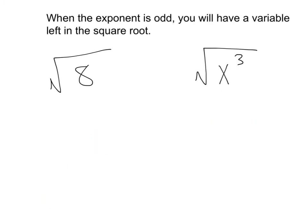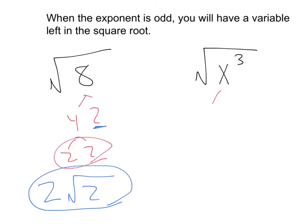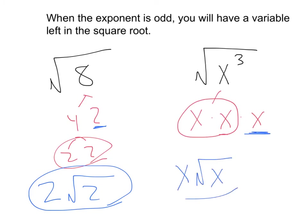What happens if the exponent is odd and two won't divide in evenly? Well, let's first take a look at square root of eight. If we broke down square root of eight, that's four times two — two and two, we'd have a pair of twos — and we'll be left with a two inside the square root. This simplifies to two square root of two. Same thing for variables: if we take x cubed, that's three x's. We've got one pair with one left over, which leaves us with x square root of x.